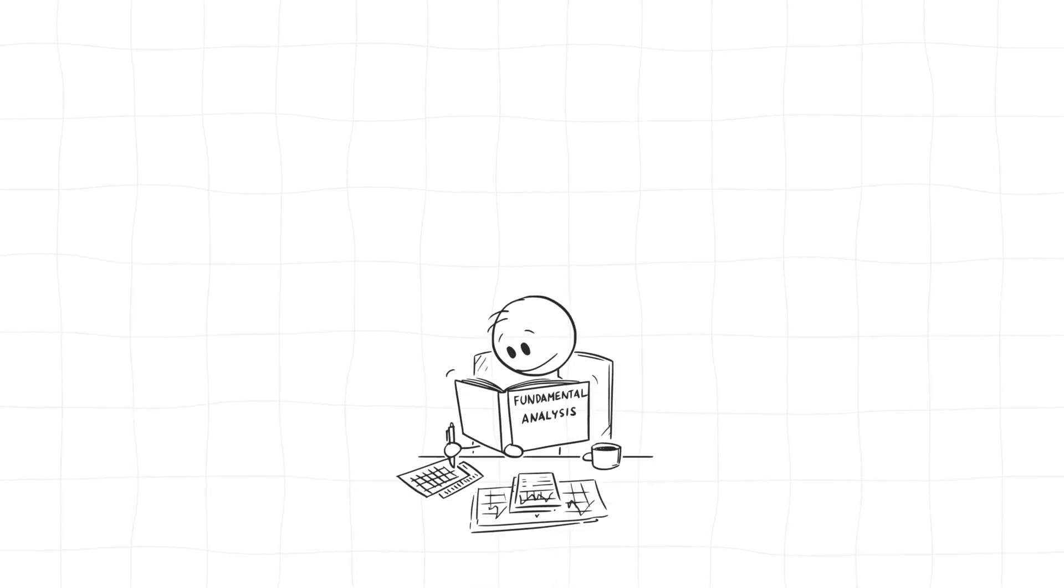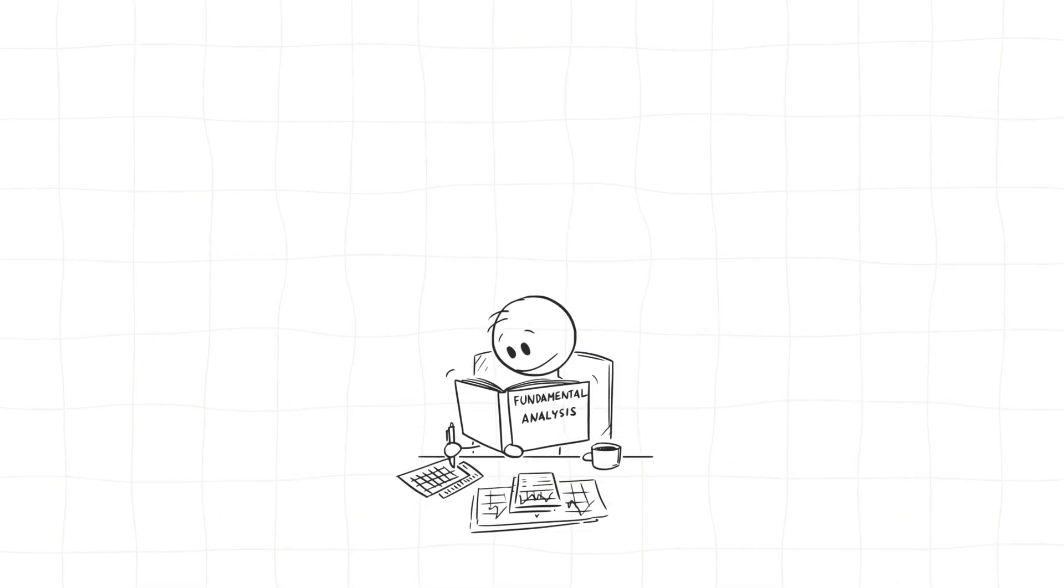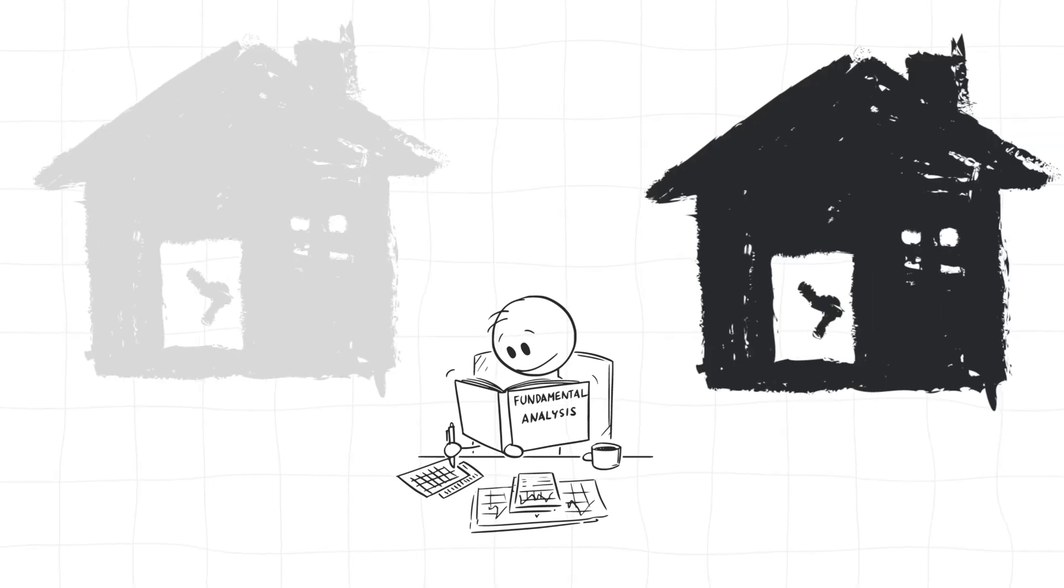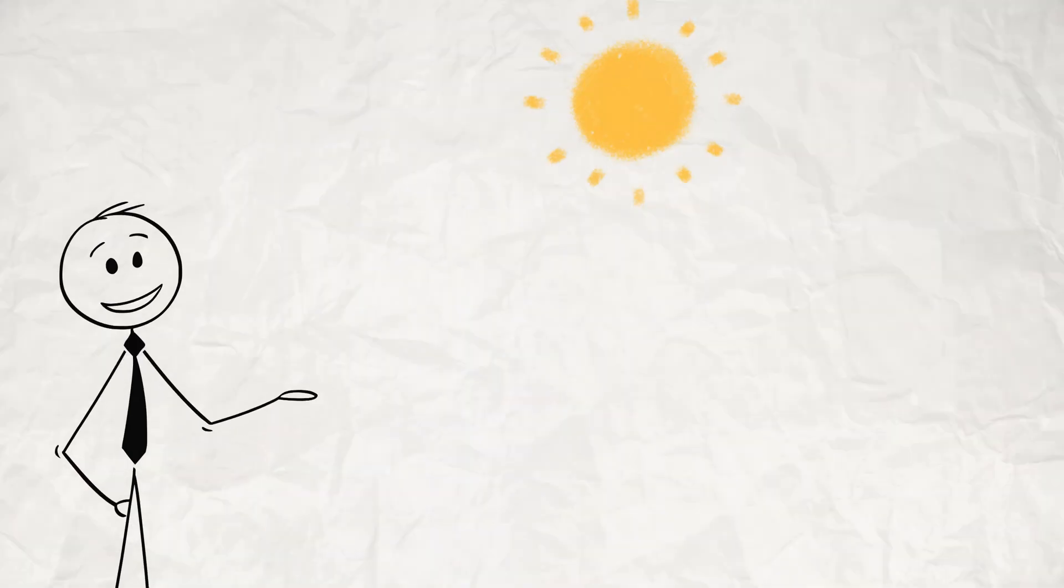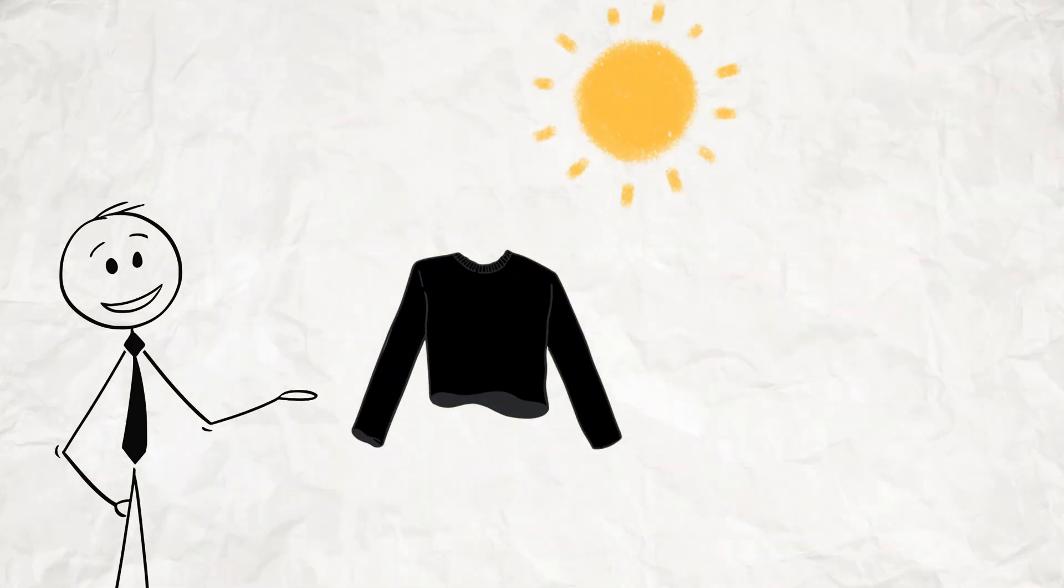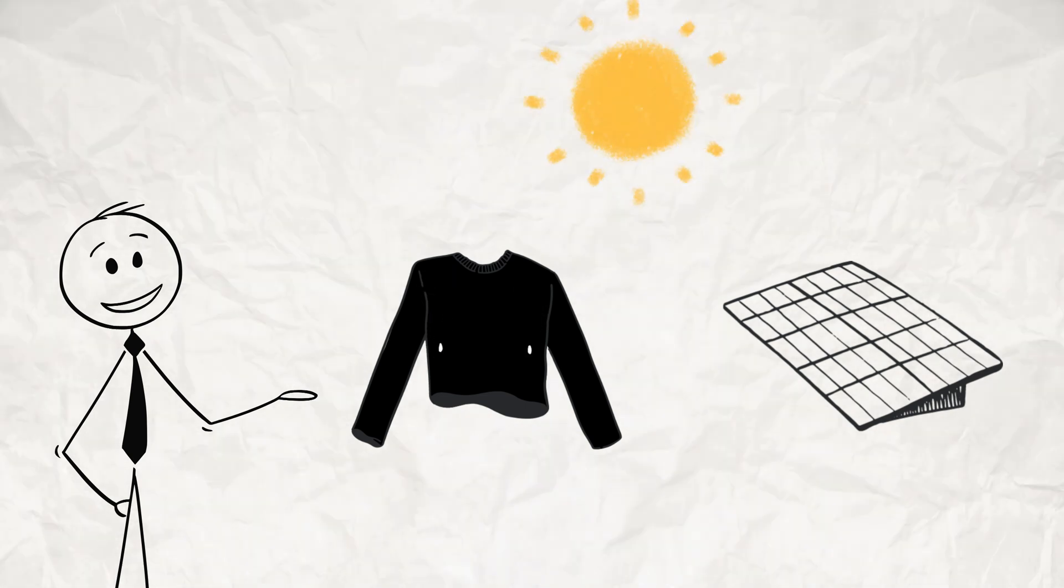In fact, in a study by the National Renewable Energy Laboratory, surfaces painted black was shown to absorb up to 90% of incident light, turning it into thermal energy. This phenomenon is why dark clothing feels hotter in the sun, and why solar panels, which need to absorb as much light as possible, are often black.